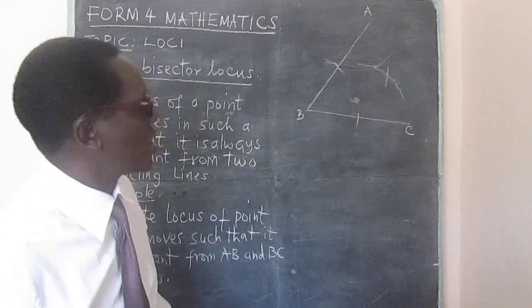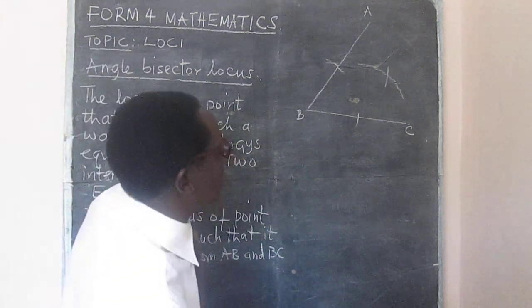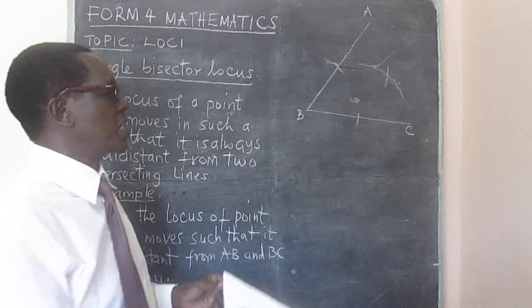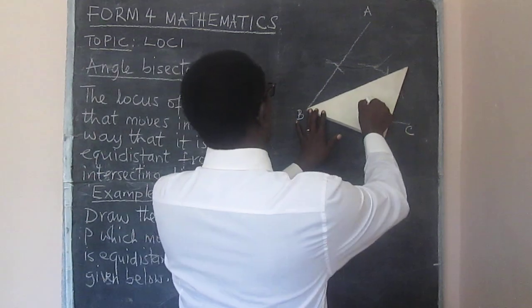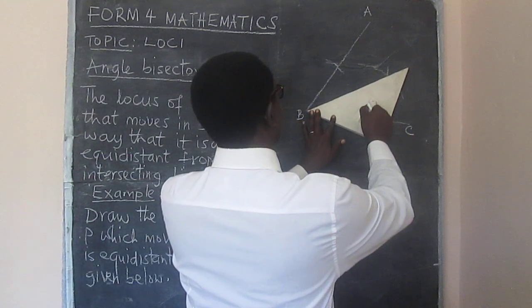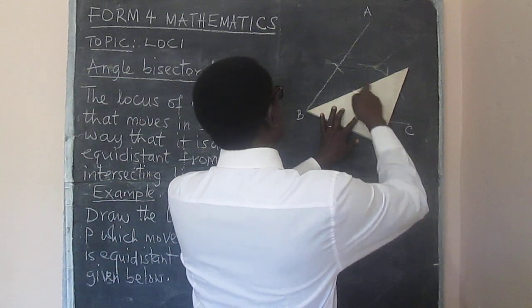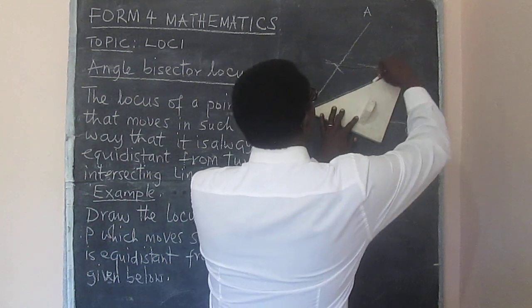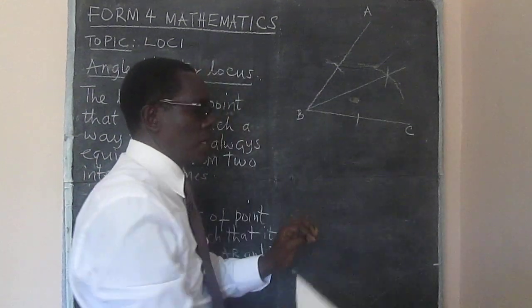All that remains now is to join B to the intersection of the arcs. That we can do with a straight edge. And here I have a straight edge, and I have the locus.